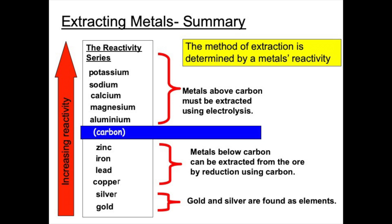So in this video we're going to look at how metals such as copper, lead, iron and zinc can be extracted from their ores. These metals are below carbon in the reactivity series and therefore it's possible to extract them by heating the metal compound with carbon. Last lesson we looked at displacement reactions — reactions where a more reactive element is able to kick out a less reactive element from a compound. In this video we're going to explore this method of extraction in more detail and discuss the meaning of terms such as oxidation, reduction and reducing agent.